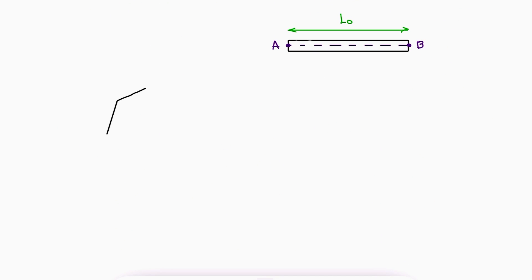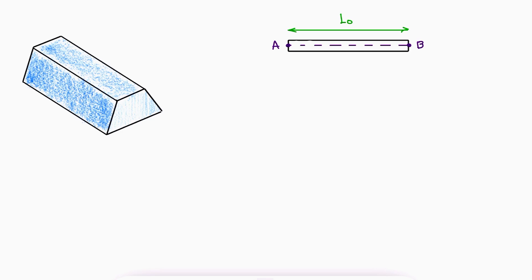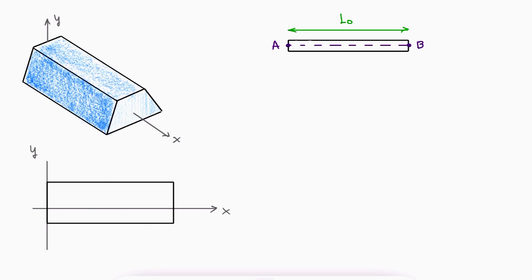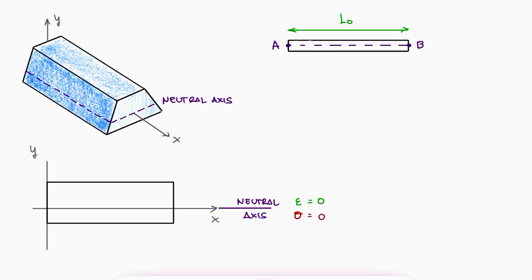Let's perform a cut on this beam, which can be any beam with a random but constant cross-section area, and let's take a look at a zoomed-in version of a side view. Since we know that the point of reference for y is the neutral axis, we know that at y equal to zero we would find the neutral axis. Since the neutral axis is not being compressed or stretched, we know that the strain is zero and therefore the stress is also zero. As we move away from the neutral axis, meaning y is no longer zero, the stress increases linearly.